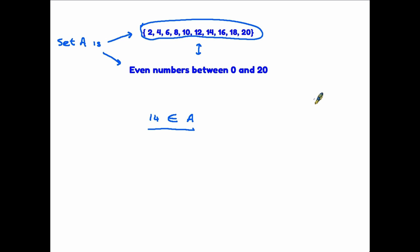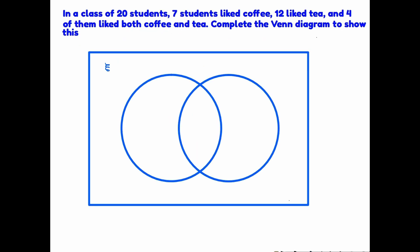I think the best way forward now is to look at some examples. I'm going to start with an example where instead of being given sets of numbers we are given a more practical scenario. We're told that we've got a class of 20 students: seven of them like coffee, 12 like tea, and four of them liked both coffee and tea — and we're asked to complete the Venn diagram.